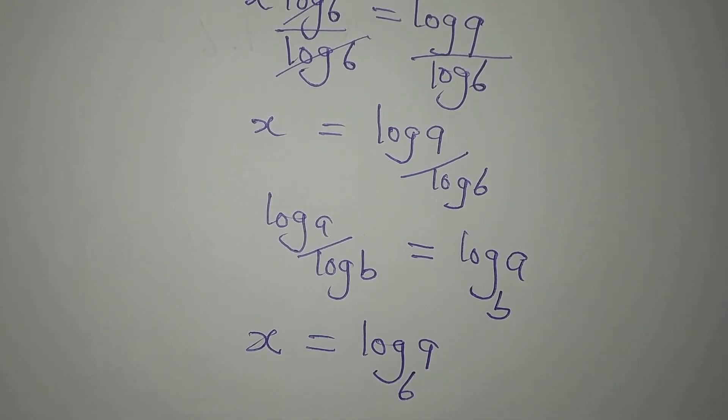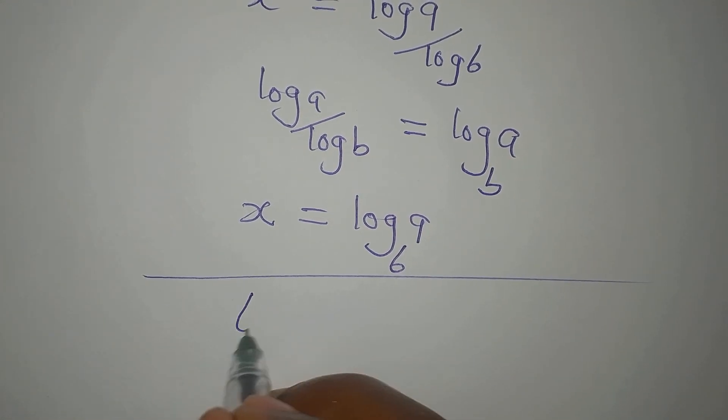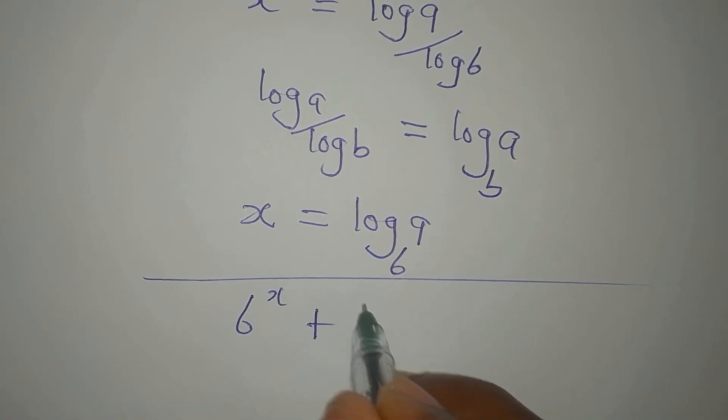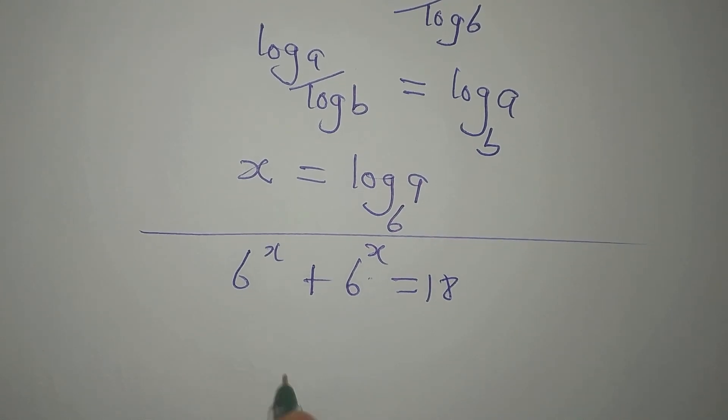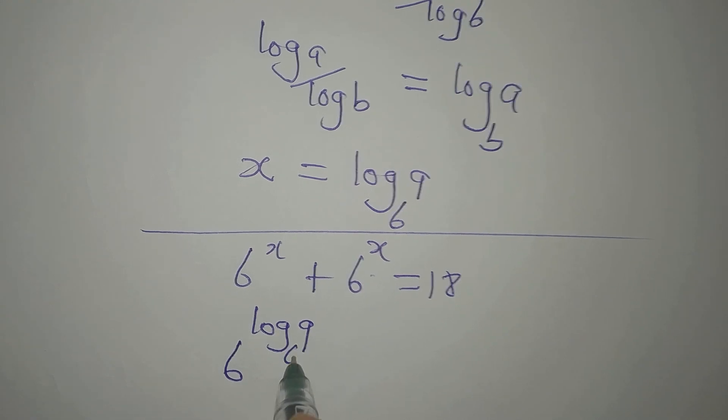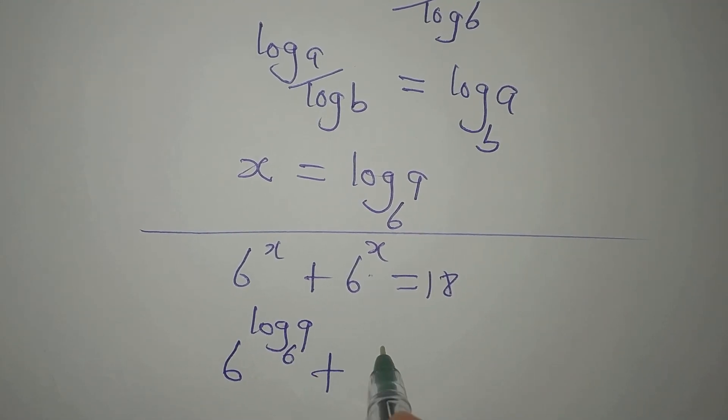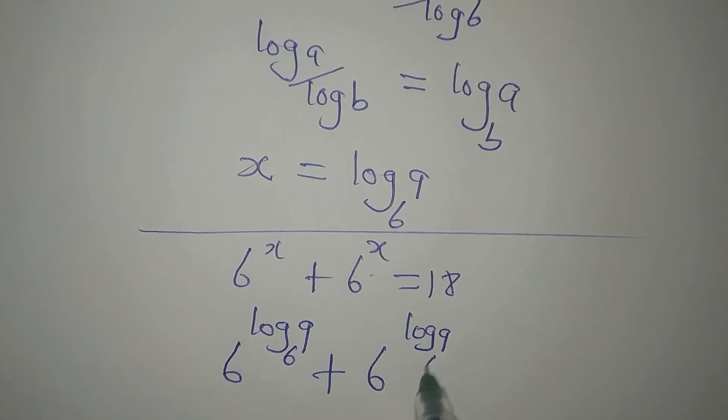Now let's verify. We had 6 to the power of x plus 6 to the power of x equals 18. This means we have 6 to the power of log 9 to base 6 plus 6 to the power of log 9 to base 6.